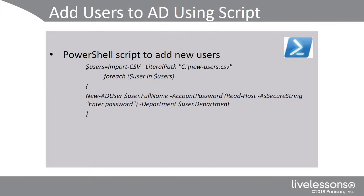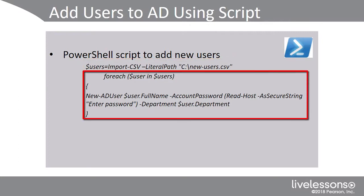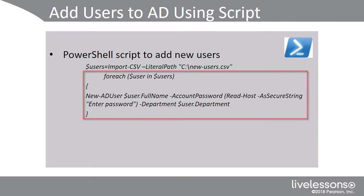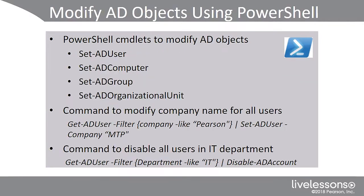Here's an example of that commandlet. To add the new users, we're going to create a variable in PowerShell and use import-CSV, then identify the location of the file that contains those users. Step two is to run a for-each loop, which means run through this file until all users have been added. We use the new-ad user PowerShell commandlet, then identify the $user.fullname column header. It will prompt for a password, and then also populate the department from the CSV file.